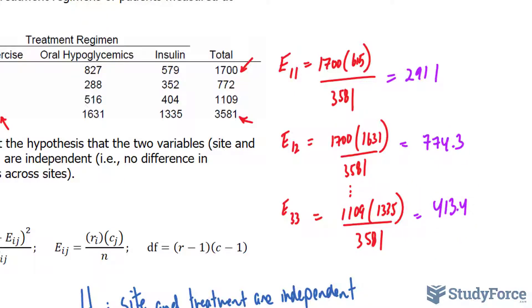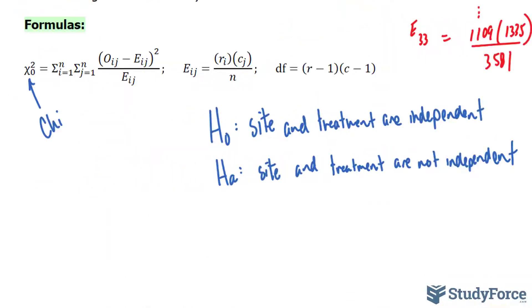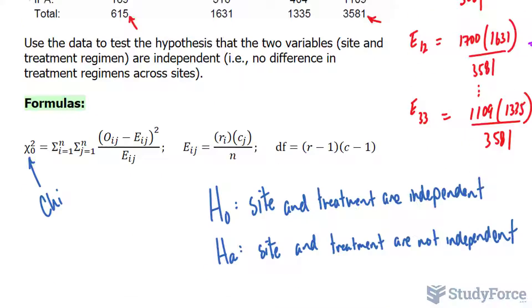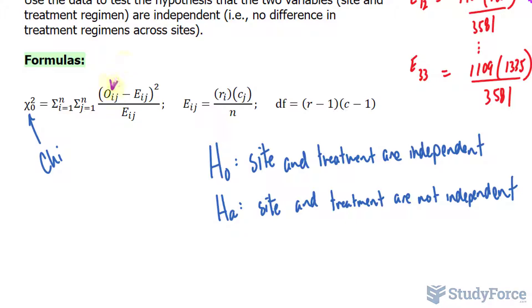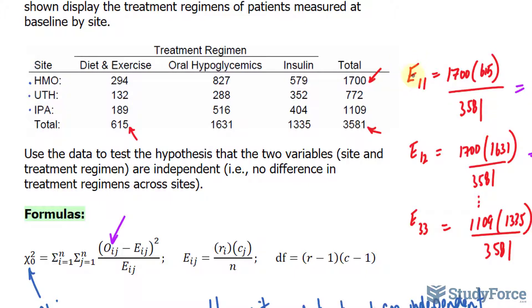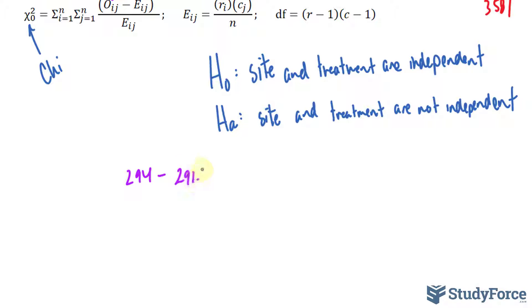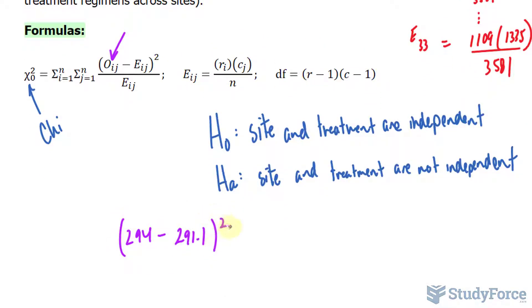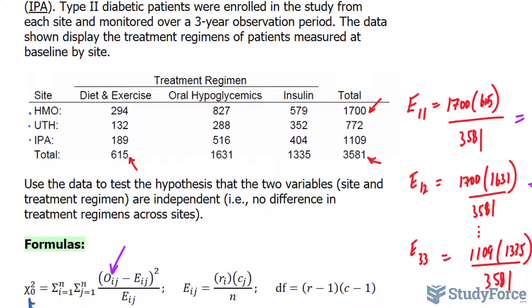Now let me show you how we plug these numbers into the formula. So looking over here, we will look for this observation, two ninety-four. That's this part right here, two nine four, minus what corresponds to it, which was E one one, two nine one point one. And we square this, raise it to the power of two, and divide by two nine one point one. Now we'll do this nine more times for each of these observations.